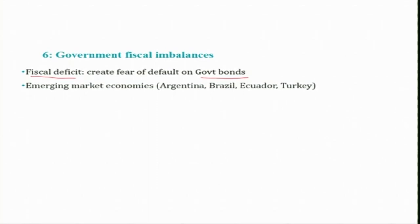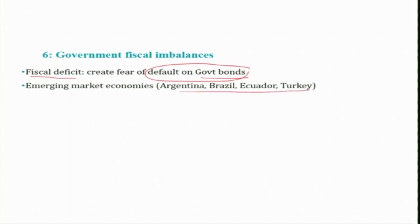If the government fiscal deficit keeps on increasing, they will be supplying more and more bonds in the market and there will be a growing fear of default on government bonds. Normally we believe that default risk is very low, but especially in developing countries and emerging market economies, when fiscal deficit keeps increasing this fear of default grows. It happened in several countries that were unable to pay back debt raised through the bond market — especially emerging economies like Argentina, Brazil, and Turkey.